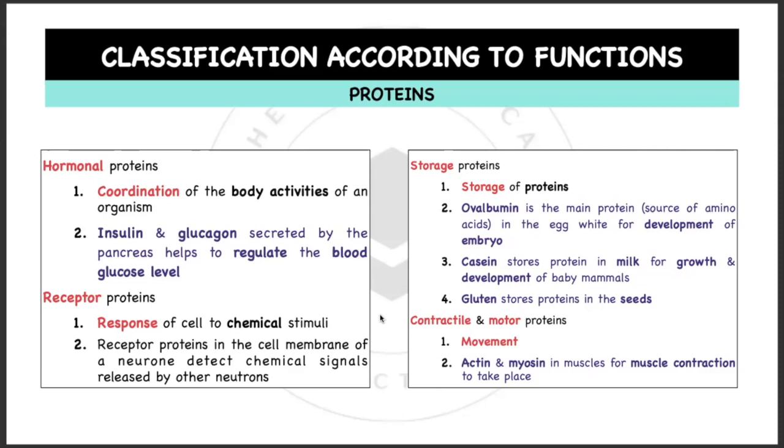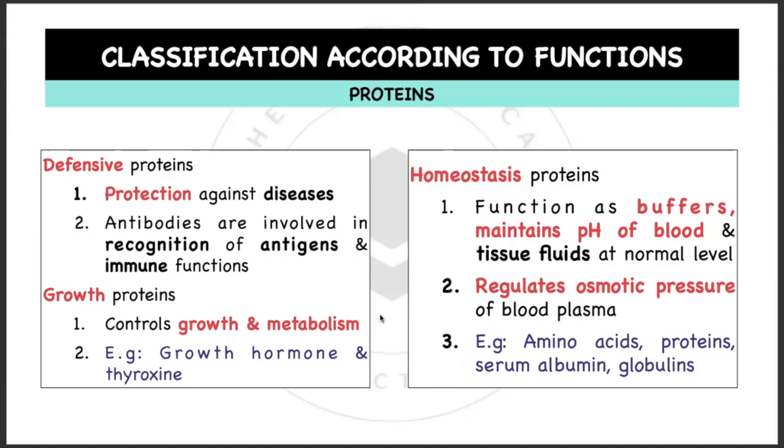Contractile and motor proteins—contractile and motor just remember movement. Examples would be actin and myosin in muscles for muscle contraction to take place, which you will learn more about in Semester 2. You also have defensive proteins—they act as defense barriers for protection against diseases. Examples would be the antibodies which are involved in recognition of antigens and also immune functions.